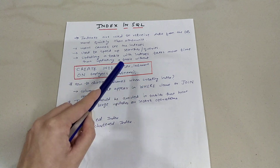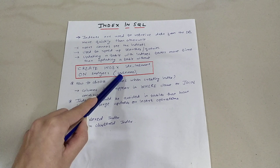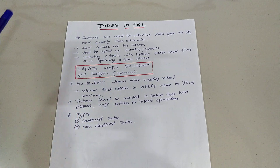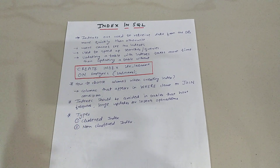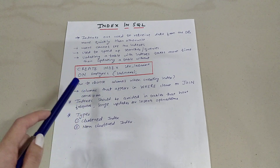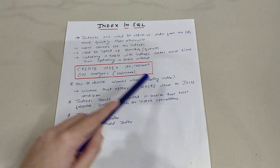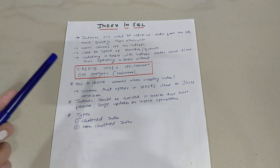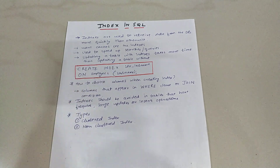Now, how to choose which column name to write when creating an index on a particular table. It is advisable that columns which appear in the WHERE clause or JOIN condition — those columns should be specified when you're creating an index.